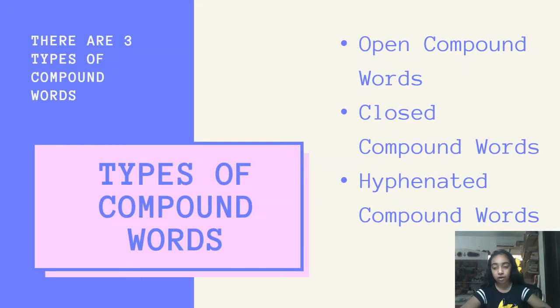There are three types of compound words: open compound words, closed compound words, and hyphenated compound words. Let's learn about all these three.